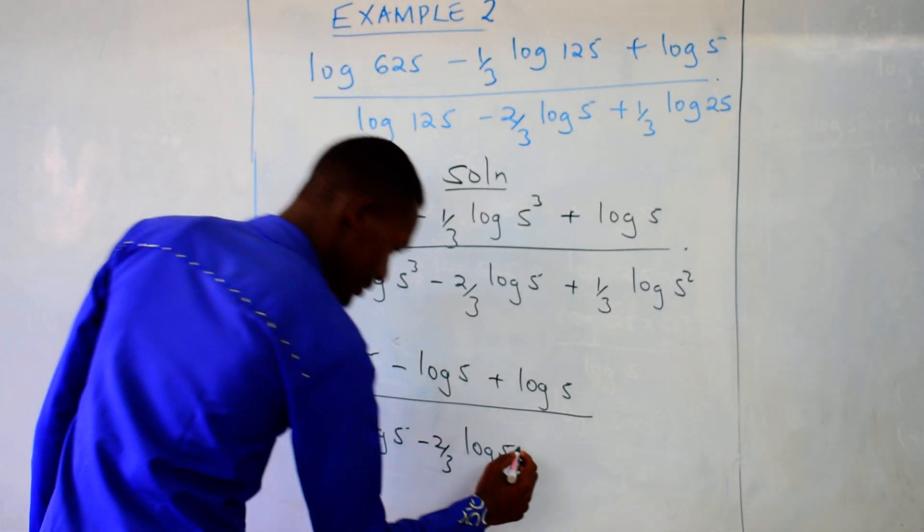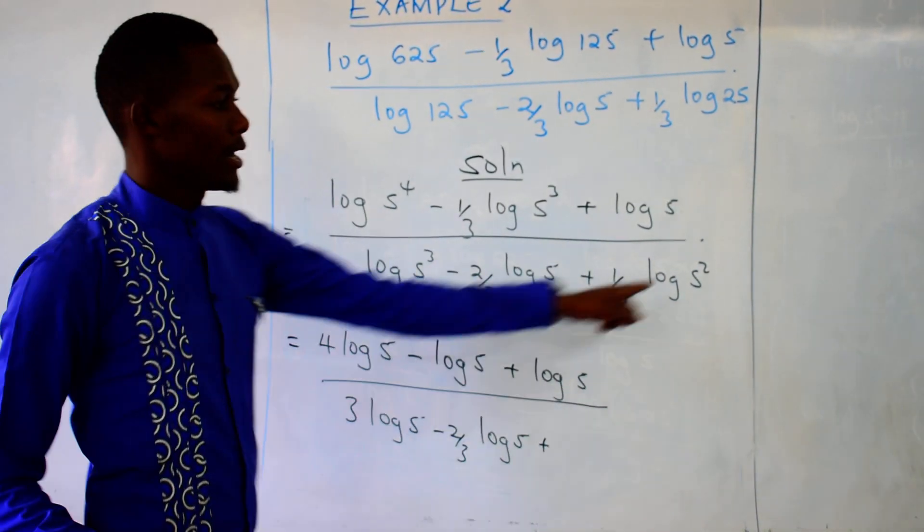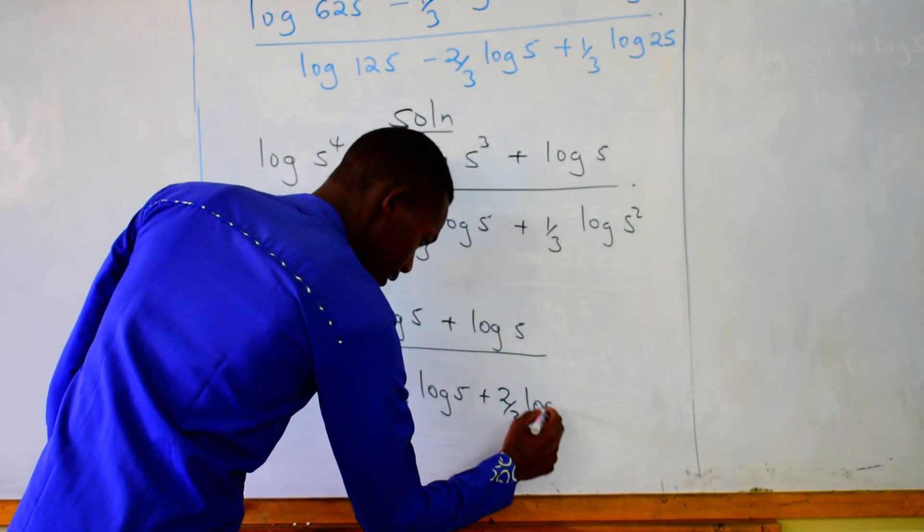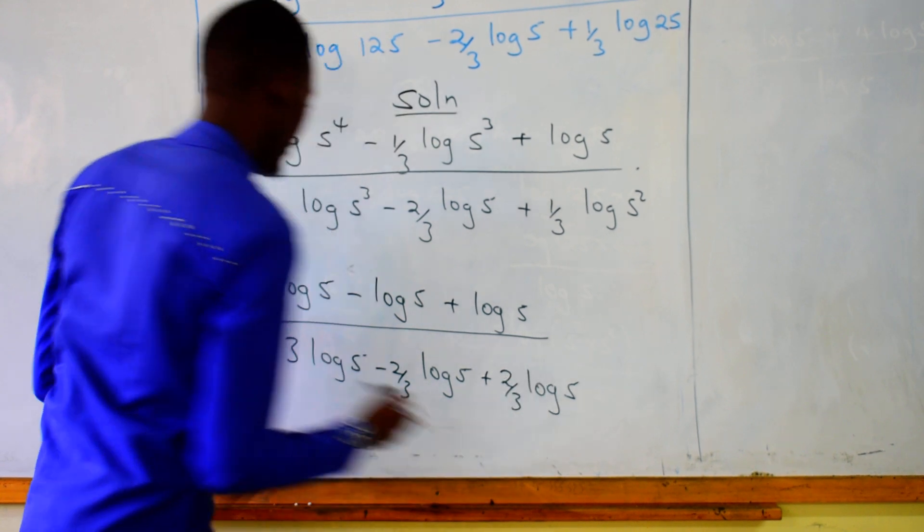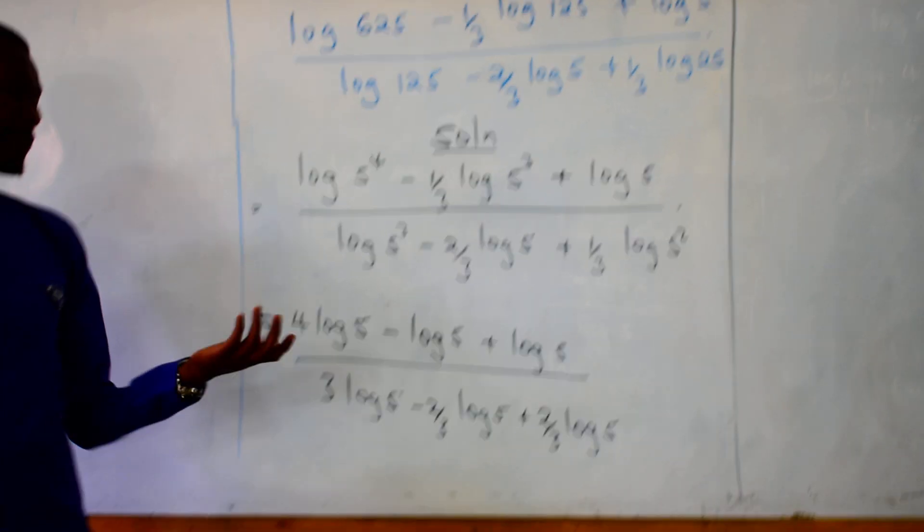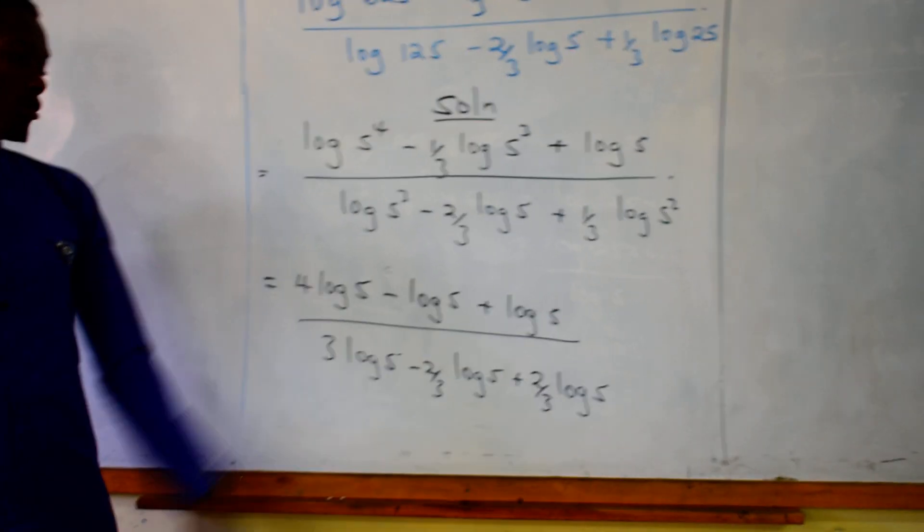Then plus, these are 2, so drop it. We have two over three log of 5. So you can see, we have simplified everything to be a log of a number 5.